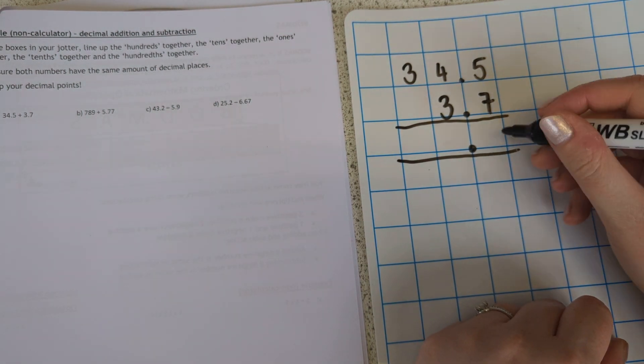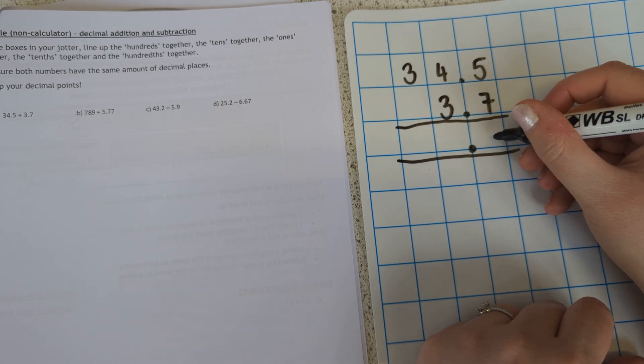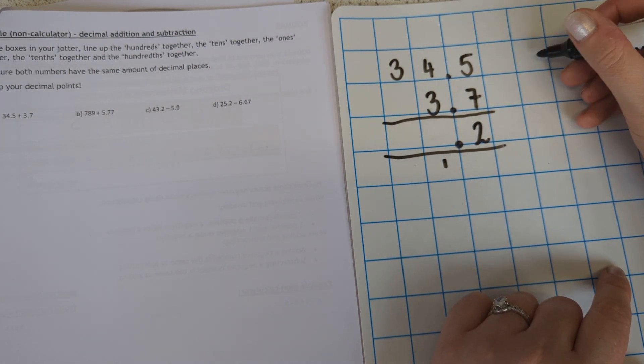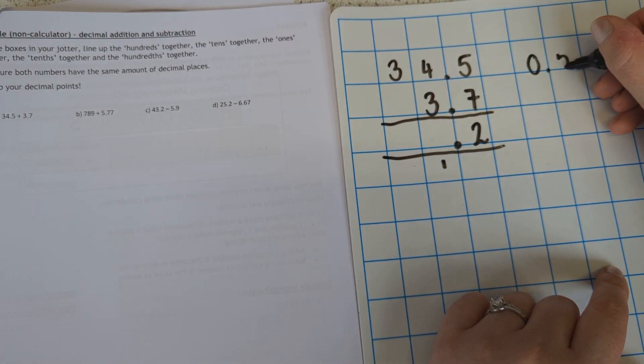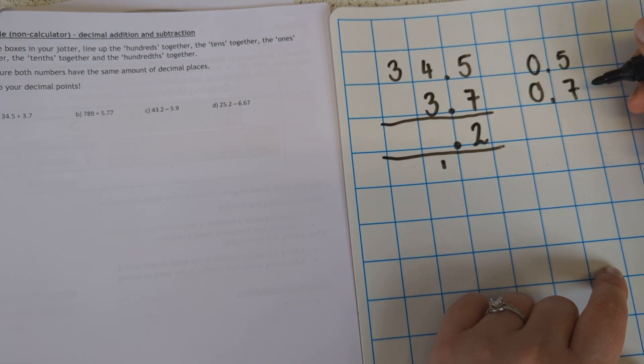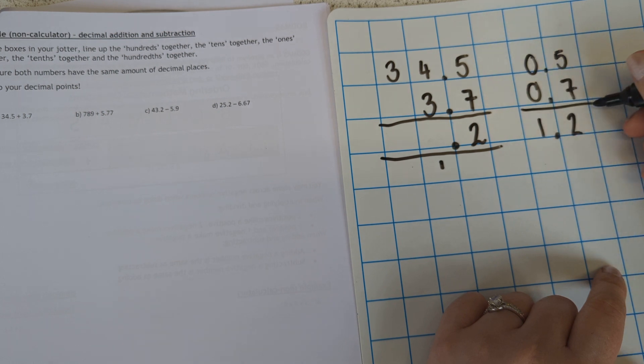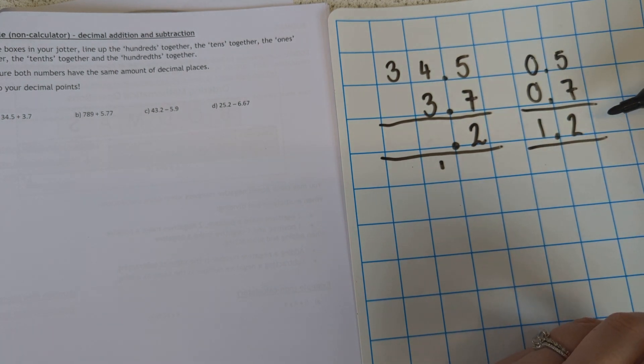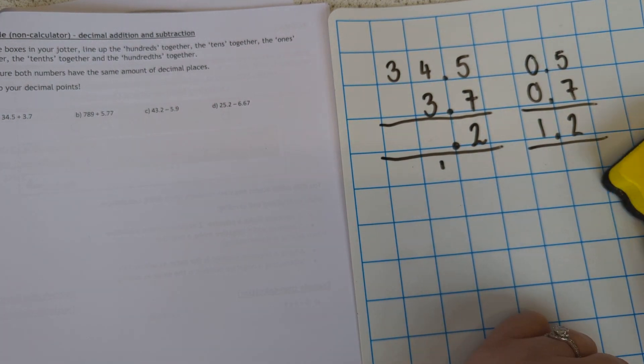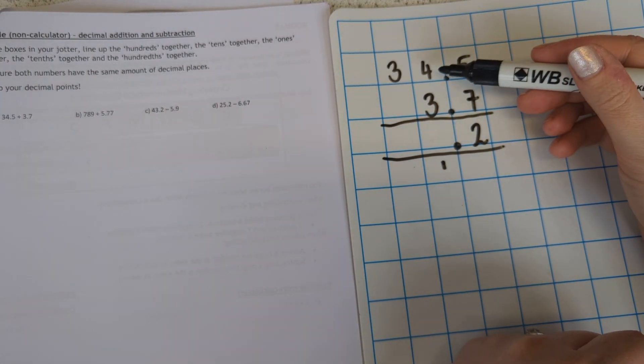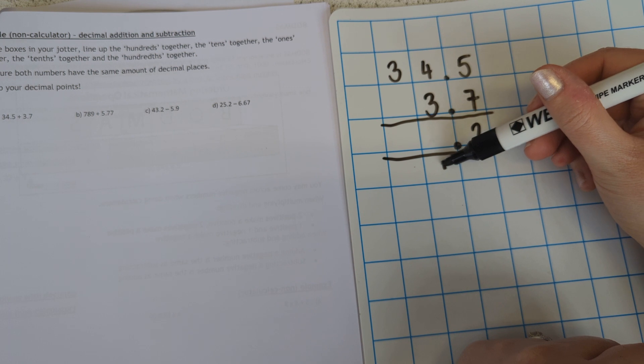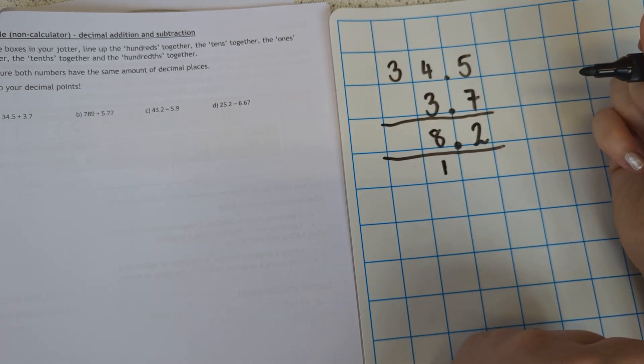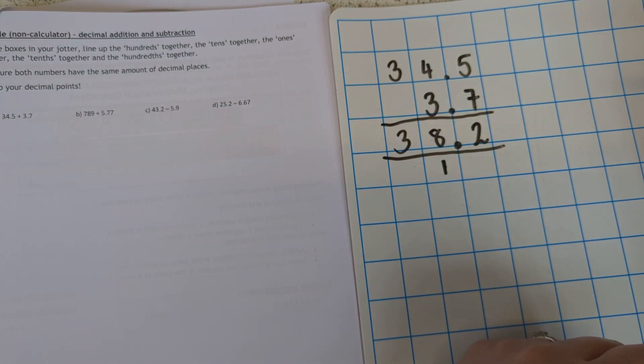So 5 plus 7 is 12. How you would go about this, how you would write it is exactly the same. But it's important to just keep in mind that what we're actually doing here is 0.5 plus 0.7, which is 1.2. It's not actually 12. Just for easiness sake, we just say 12. But it's important to keep in mind what sum we are actually doing. Then we're doing 4 plus 3, which is 7. But we have a whole here. So 4 plus 3 plus 1, which is 8. And then we just have the 3 in this column. So we get 38.2.